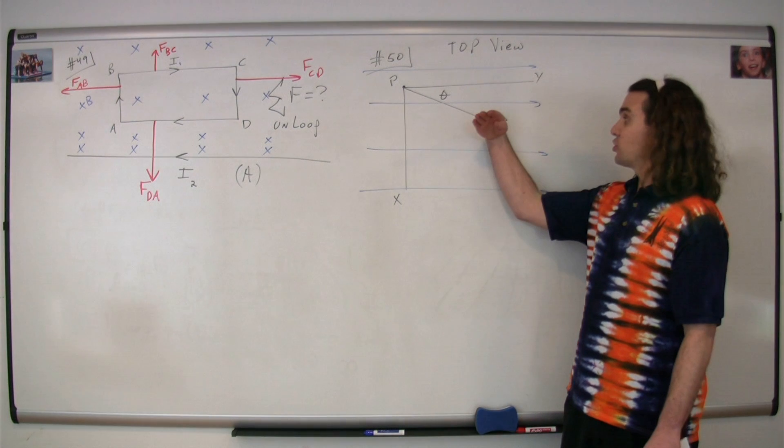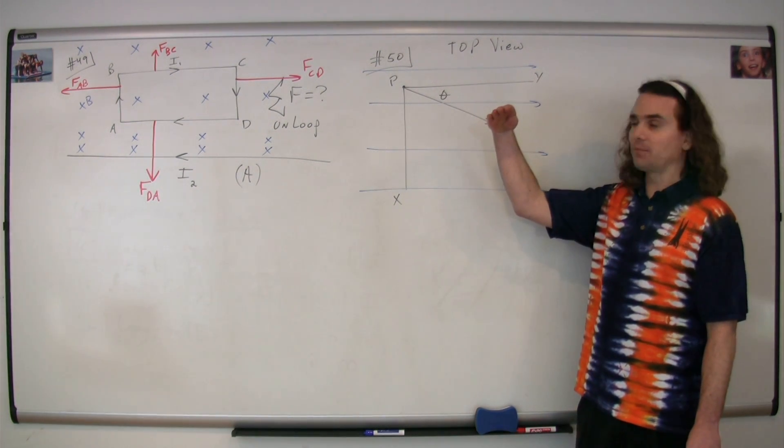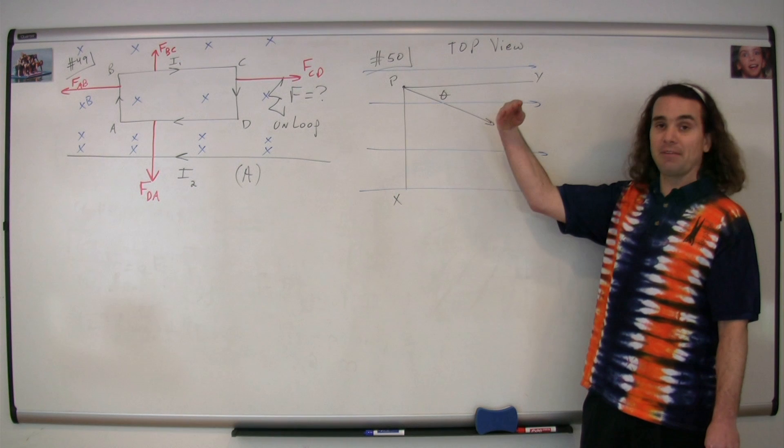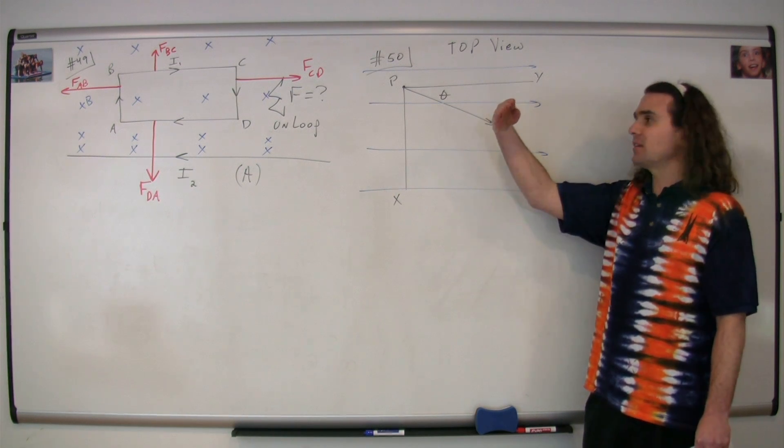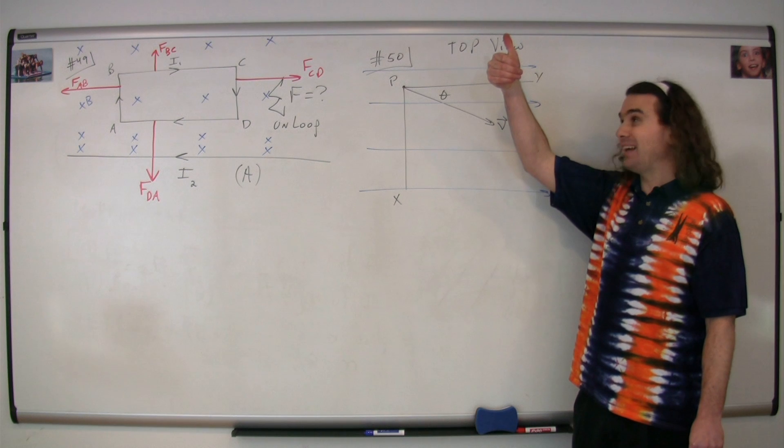So, this charge is now moving also, just that component in the positive z direction. We can point our fingers in the direction of that component of the velocity, curl our fingers in the direction of the magnetic field, and our thumb points in this direction.